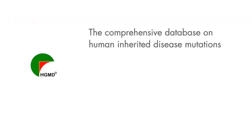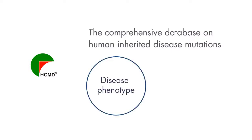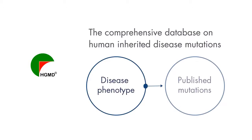HGMD, the Comprehensive Database on Human Inherited Disease Mutations, helps researchers and clinicians identify the disease phenotypes associated with published mutations.